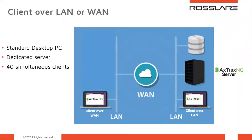First, you should know that AXOX-NG is truly a client-server architecture. When we say server, it does not have to be installed on a server machine — a standard desktop PC is more than sufficient for a small system. We do recommend you use it only for the access control software. You can have up to 40 simultaneous clients connecting back to that server — for example, a client on somebody's desktop in HR to issue additional cards, and one at the guard station to monitor what is going on in the system.